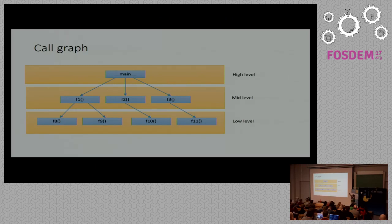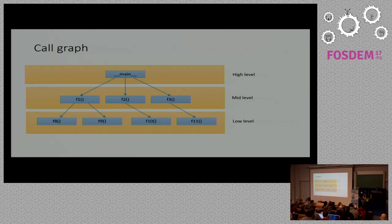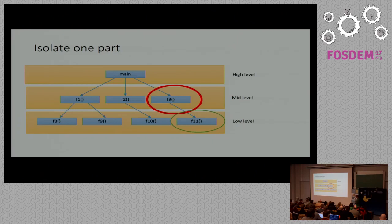Looking back at the call graph, we have high-level code, mid-level code, and low-level code. The high-level code calls mid-level code at runtime, but also in the source code the high-level code refers to the mid-level code, and the mid-level code refers to the low-level code. So high-level policies depend on low-level details. If one function at the lower level changes its interface, the high-level code has to adapt. Also, if we want to reuse function F3, we're unable to pull it out of this application without pulling F11 along with it, because F3 depends on F11.